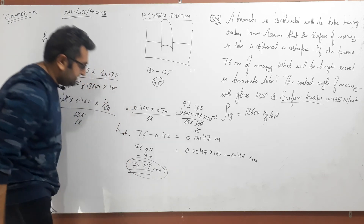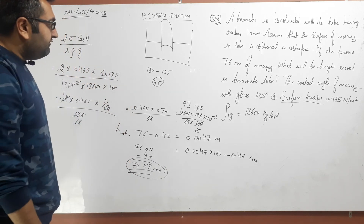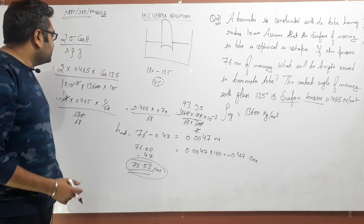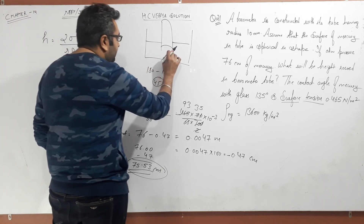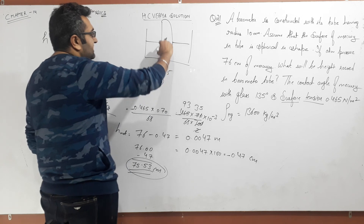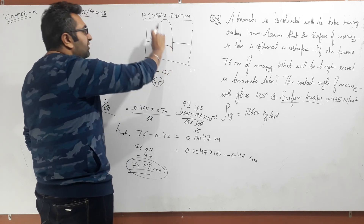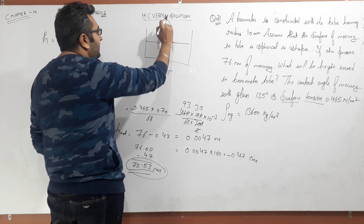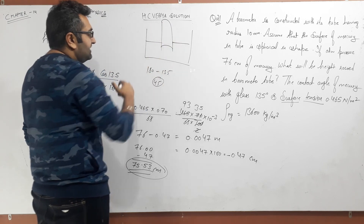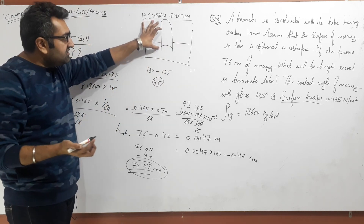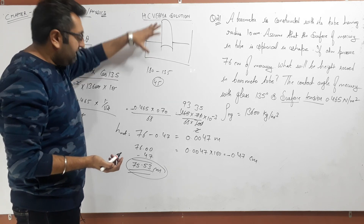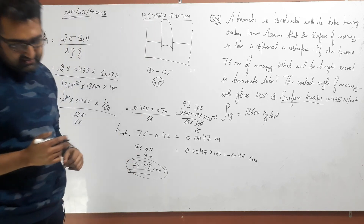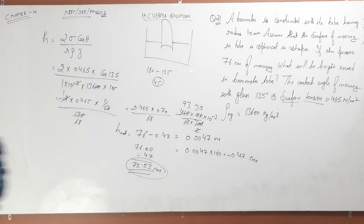So the net height comes out to 75.53 cm — that is the answer to the question. To summarize: in mercury barometers, surface tension causes the mercury to go down slightly (unlike water, which rises). So the mercury doesn't reach exactly 76 cm; it goes a little lower due to surface tension, and the net height is 75.53 cm. If you have any doubt you can ask, and please subscribe to the channel.